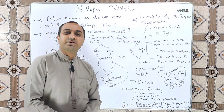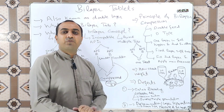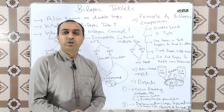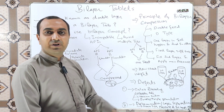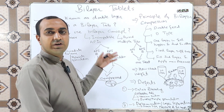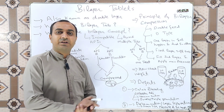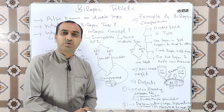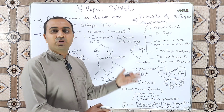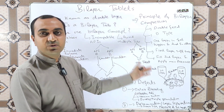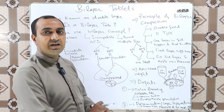Delamination, also known as layer separation, is a defect where the two layers separate when the tablet is compressed — during the friability test, the two layers come apart. The reasons are that granule size may be very large or pre-compression pressure may be very high. Solutions: reduce the granule size and reduce the pre-compression pressure for the first layer.